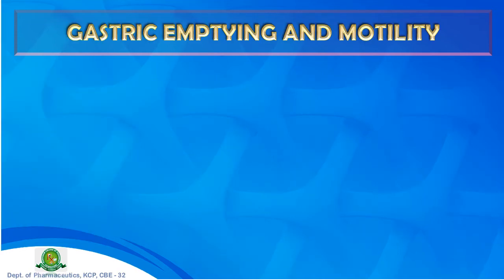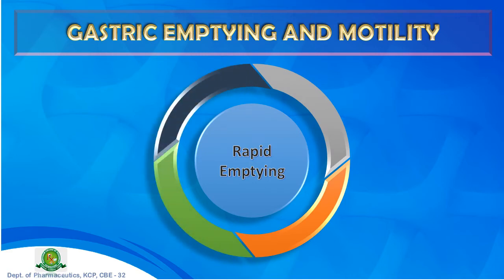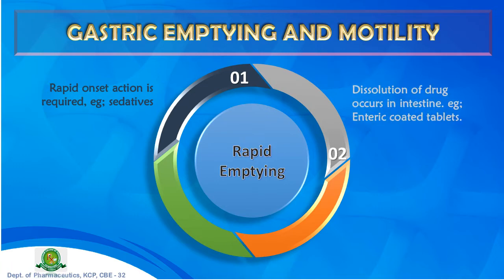Gastric emptying is the passage of content from the stomach to the small intestine. Rapid gastric emptying is desirable in four conditions: rapid onset of action for sedatives; dissolution of enteric-coated tablets in the intestine; drugs unstable in gastric fluid that benefit from quicker transit; and drugs best absorbed from the distal small intestine, such as vitamin B12.